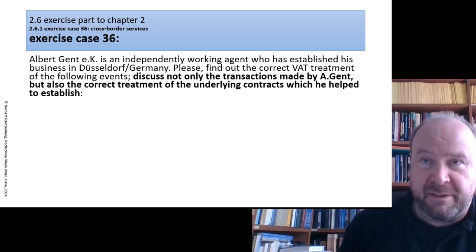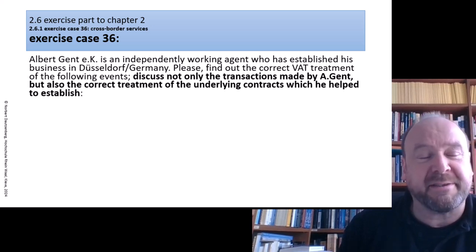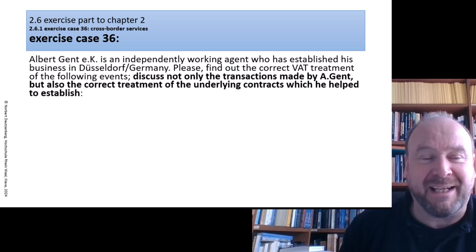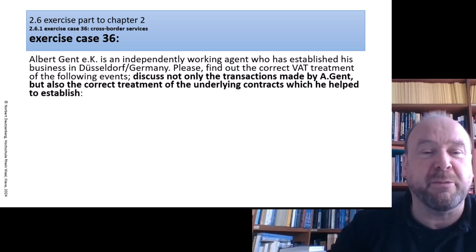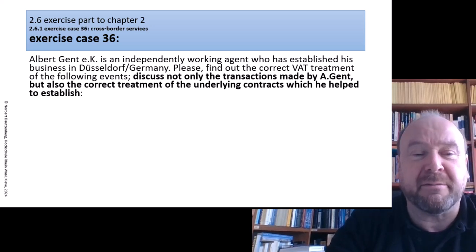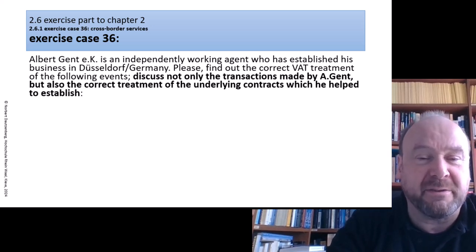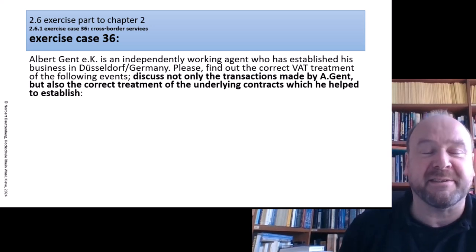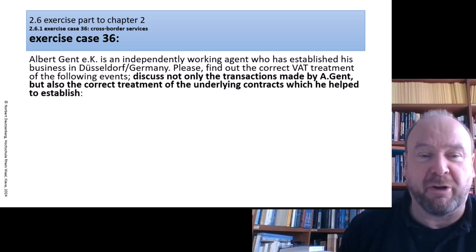This video's exercise case is about Albert Ghent. He is an EK — an eingetragener Kaufmann, a registered merchant — and he is an independently working agent who has established his business in Düsseldorf in Germany.